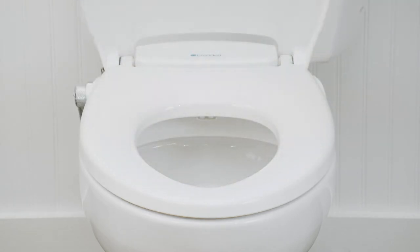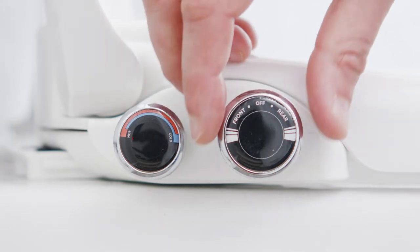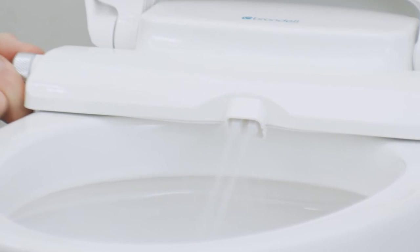First, sit down on your Eco Seat. To begin a wash, turn the dial after picking your nozzle position. The nozzles will go through a brief self-clean as you turn the dial for either a front or rear cleansing.